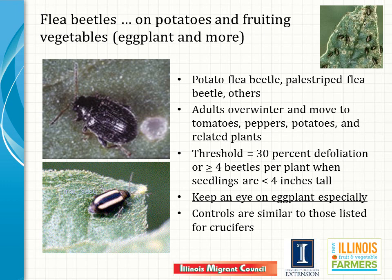Flea beetles on potatoes and fruiting vegetables such as tomato, pepper, and eggplant — potato flea beetle and pale striped flea beetle — share those crops. Adults overwinter and move to the crop early in spring. Because we are not harvesting the foliage of these crops, generally if there's not more than about 30% of leaf area removed or more than four beetles per plant when seedlings are small, control is not needed. Watch eggplant carefully as flea beetle numbers build up very quickly and can cause severe foliage damage. Controls include insecticides and row covers, similar to cabbage family plants. Row covers must be removed when crops begin to bloom to allow pollinators to reach blossoms.